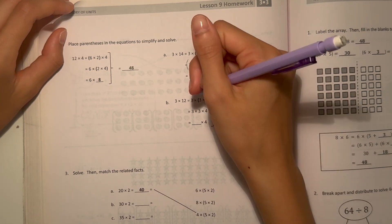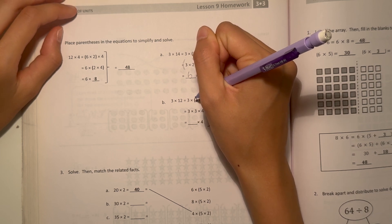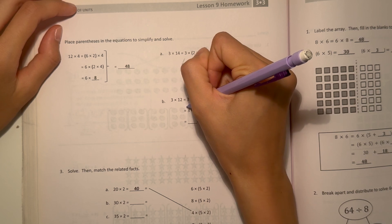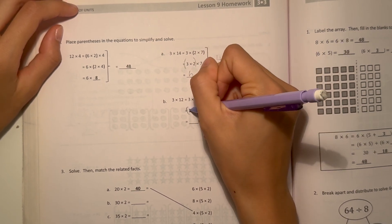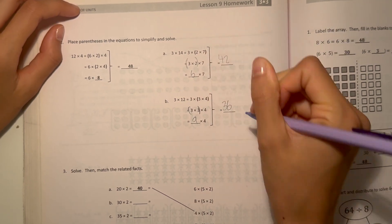Alright, now for B. 3 times 12 equals 3 times 3 times 4. So 3 times 3 over here, and we can put parentheses around that, and now times 4. 3 times 3 is 9, times 4 is 36. So 3 times 12 is 36.